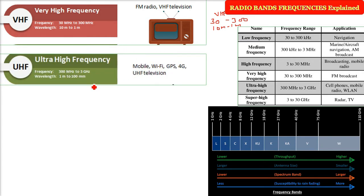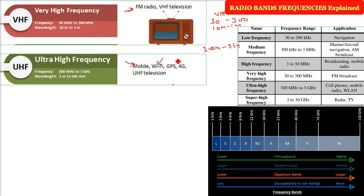Then we have the Ultra High Frequency (UHF) band, ranging from 300 megahertz to 3 gigahertz. Giga is 10 to the power 9. Mobile, Wi-Fi, GPS, 4G, and television all work in this band. The wavelength is from 1 meter to 100 millimeters.